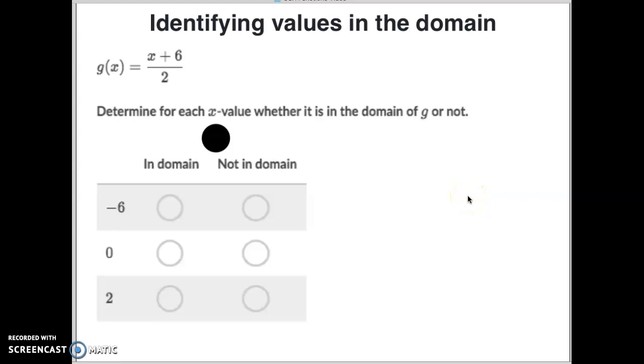Hey, good morning, CCA Intermediate Algebra students. Today's Khan Academy is actually really quite simple. You just have to think about each problem just for a moment to make sure you're answering it correctly. But it's quite simple once you do that. Today you're identifying values in the domain.